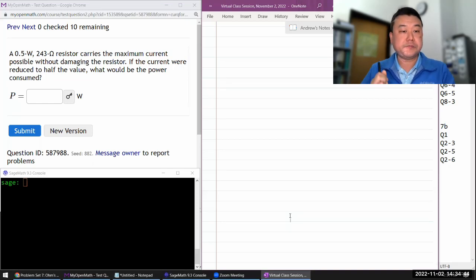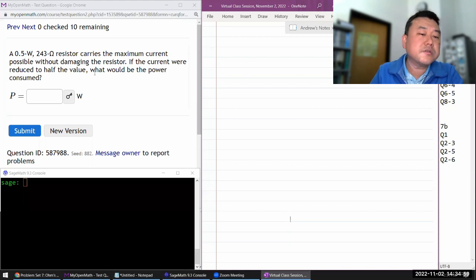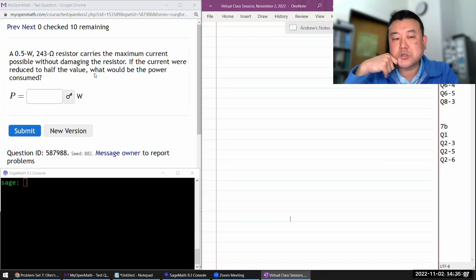Okay, so it says some resistance carries the maximum current possible without damaging the resistor. If the current were reduced to half the resistor's value, what would be the power consumed? Okay, so I think the way to approach this question would be to think of it like a scaling argument question.